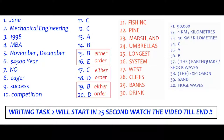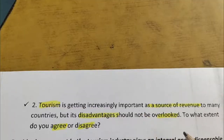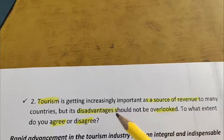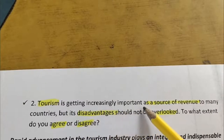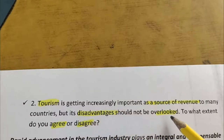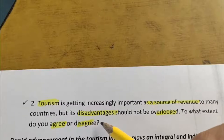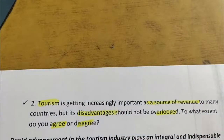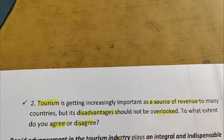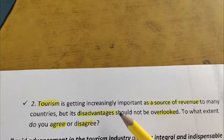You now have half a minute to check your answers. Now, this video is for you if you're aiming for a band score of 9 in your writing. So are you ready? Here we go. Today's topic is: 'Tourism is getting increasingly important as a source of revenue to many countries, but its disadvantages should not be overlooked. To what extent do you agree or disagree?' It's a very nice and expected topic — you can see this topic in your exam as well. I request you to watch my full video so that you can get a load of ideas, learn how to write a well-organized essay, and how to use a wide range of vocabulary and different kinds of sentences.